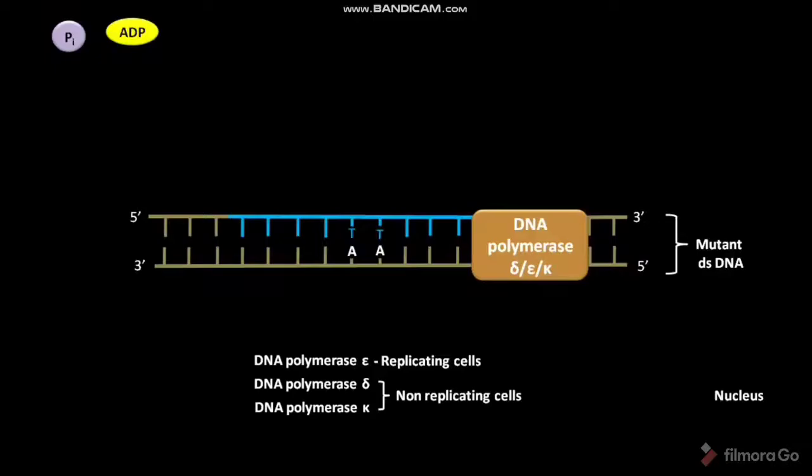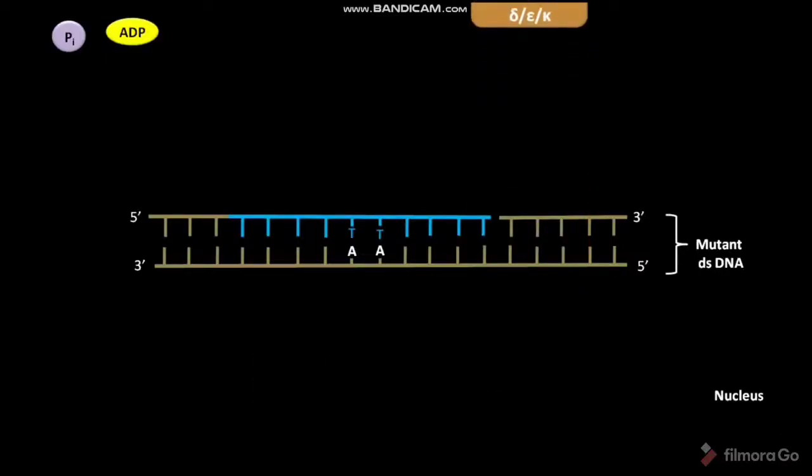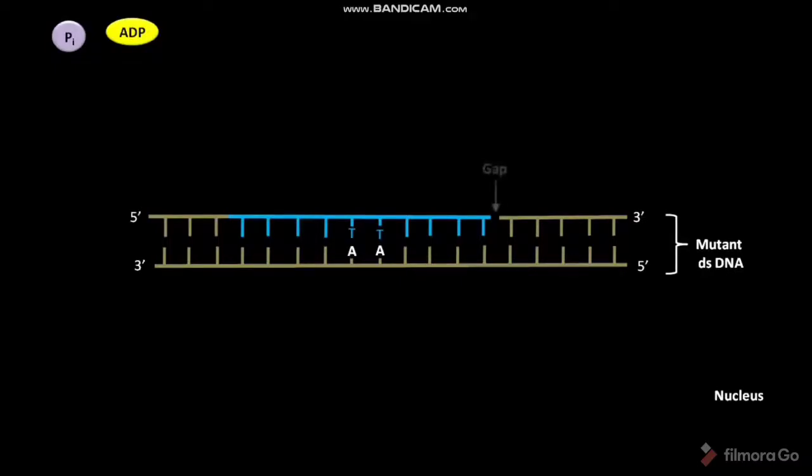After filling the gap, DNA polymerase delta, epsilon, or kappa leaves the mutant double-stranded DNA leaving behind a gap. DNA ligase then binds to the gap region, seals it, and leaves the double-stranded DNA. As a result, the cell regains its wild-type DNA.